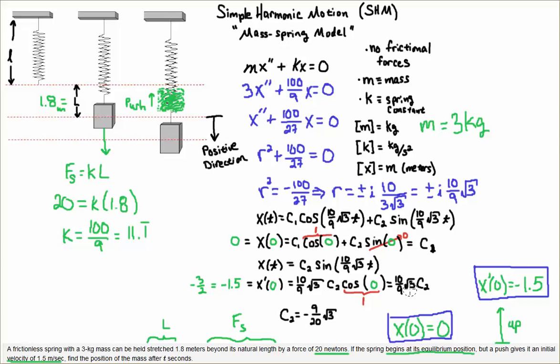I solve for C₂ and rationalize the denominator. We get minus 9√3/20. That is what C₂ is. I plug that into what remains for my general solution and get this solution to the initial value problem.